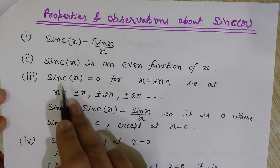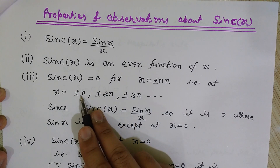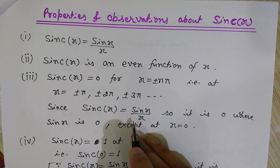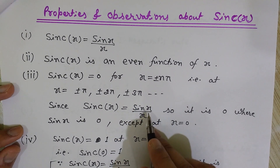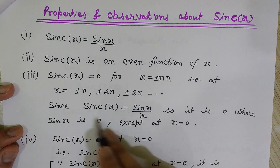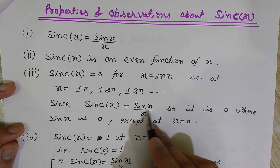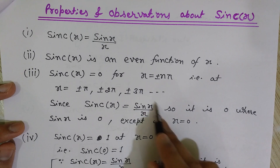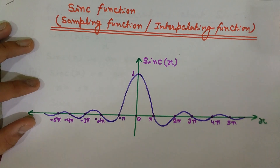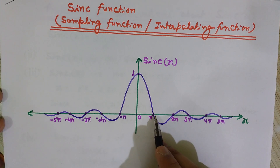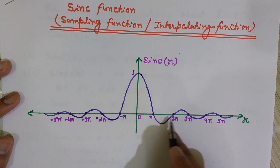The third property: sinc(x) is 0 for x = ±nπ — that is, it is 0 at ±π, ±2π, ±3π. Since sinc(x) is denoted as sin(x)/x, it will be 0 when the numerator sin(x) is 0. We know that sin(x) is 0 at values of nπ. Therefore sinc(x) is 0 at nπ, as also seen in the graph.